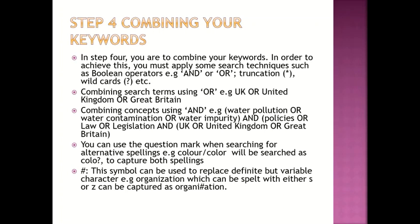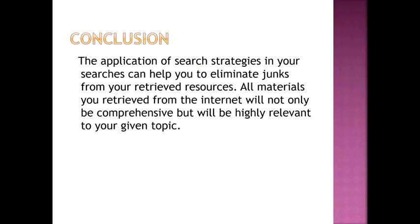You can use the question mark when searching for alternative spellings — for instance, 'color,' which has both UK and American spellings. You can write the search term in a way that captures both spellings. You can also use the asterisk symbol, which can be used to replace definite but variable characters — for example, 'organi*ation,' which can be spelled with either 's' or 'z' — and this will capture both spellings.